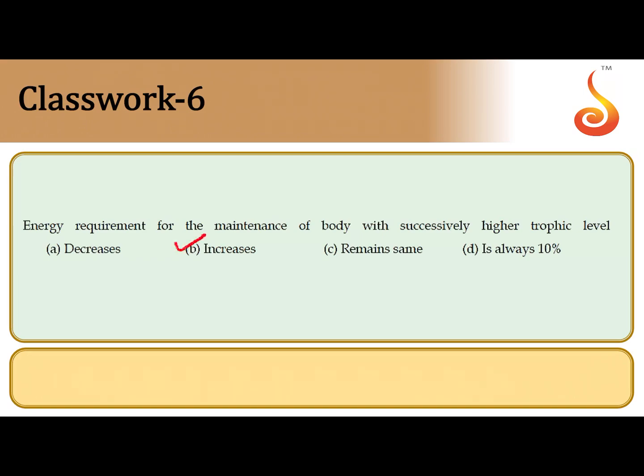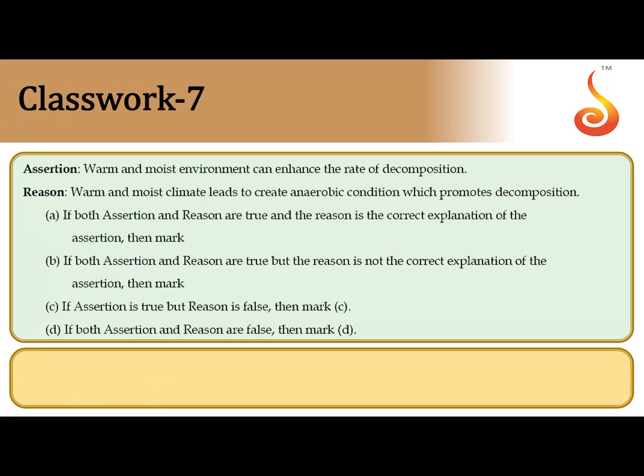The sixth question: energy requirement for maintenance of body with successively higher trophic levels. Please remember energy requirement increases as we go up trophic levels. However, the available energy keeps decreasing as we go up, following the 10 percent law. But the demand or requirement of energy by the organism keeps increasing. So the correct answer is option B.